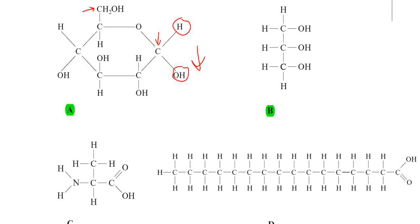Compound B is only three carbons long. Each carbon has an OH group attached to it, so this compound is glycerol.